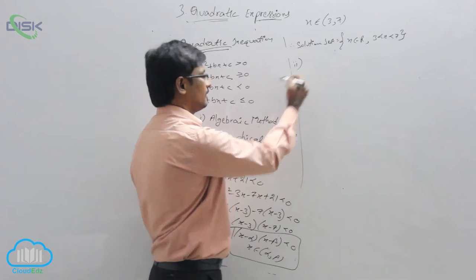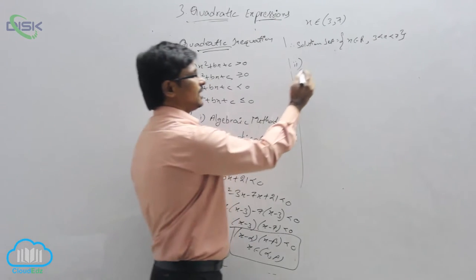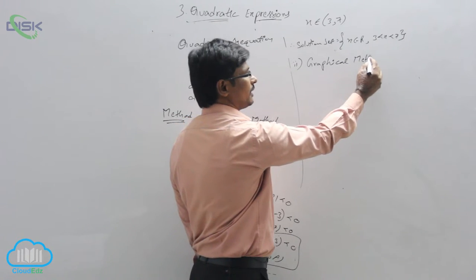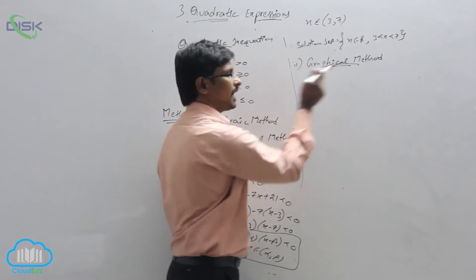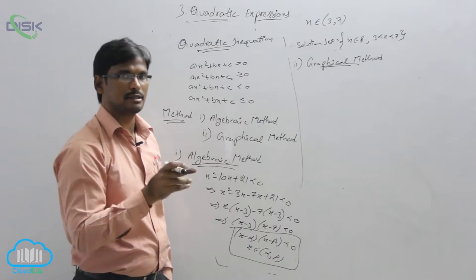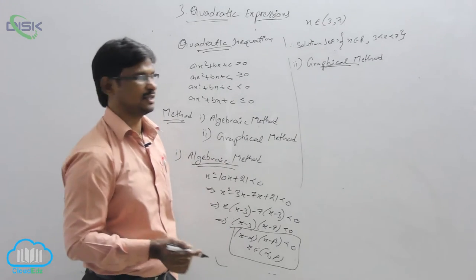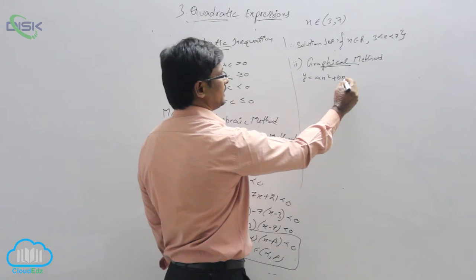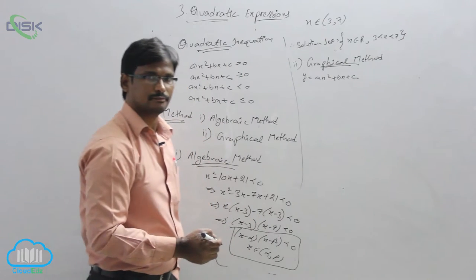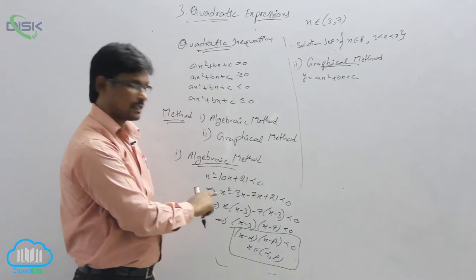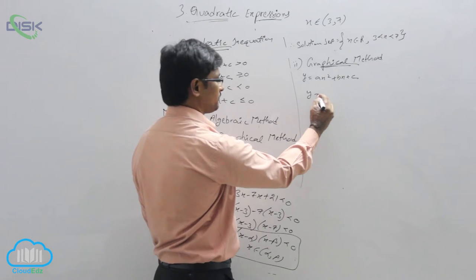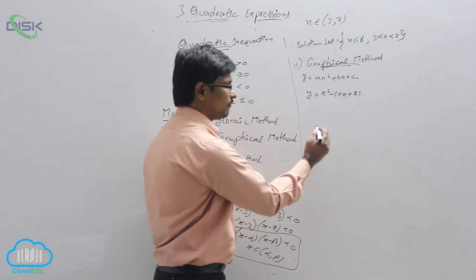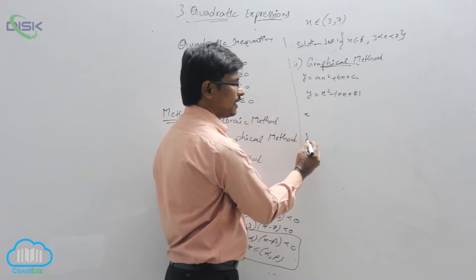Now the second method: the graphical method. In the graphical method, we need to draw the graph of the quadratic inequation, then observe the quadratic graph and write down the solution using the graph. We let y equal to Ax² + Bx + C, which here is x² minus 10x plus 21. We take some x values and find the corresponding y values.